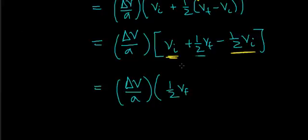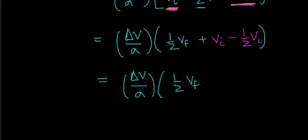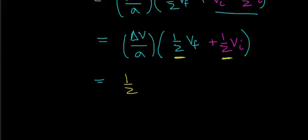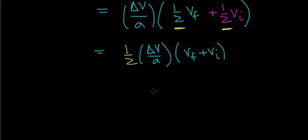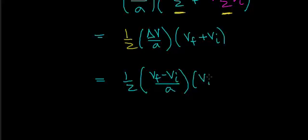Pulling the v initial term out gives plus, combining v initial minus one-half v initial, which simplifies to one-half v initial. So I can rewrite this as delta v over the acceleration times one-half v final plus one-half v initial. Factoring out the one-half gives one-half of delta v divided by the acceleration, times v final plus v initial. Expanding delta v as v final minus v initial, this becomes one-half times v final minus v initial, divided by the acceleration, times v final plus v initial.